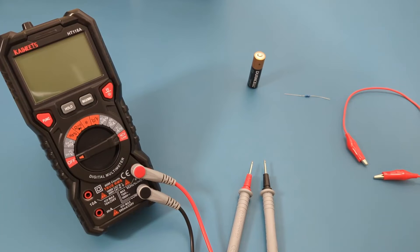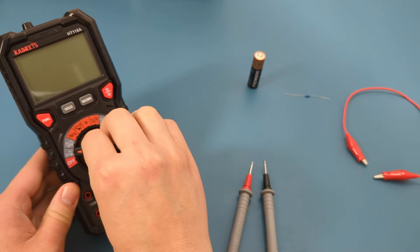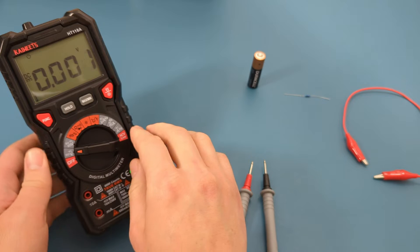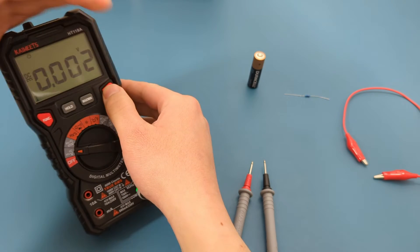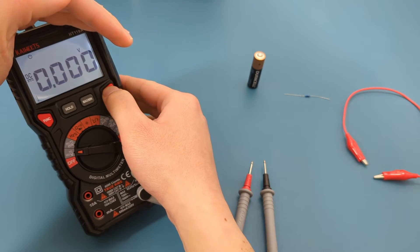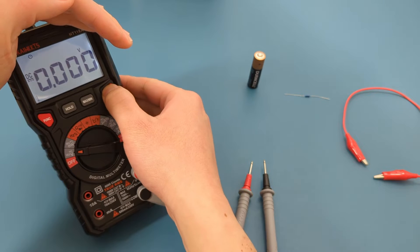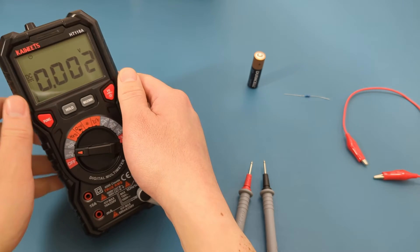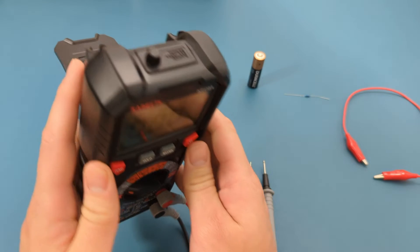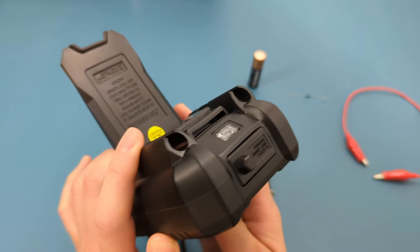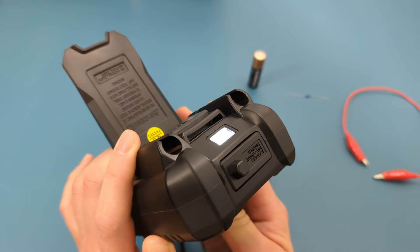Now it's time to see what this multimeter can do using different test scenarios. Before we get started, there are two more things we should look at. The first is to turn on the LCD backlight by pressing the red button. The second thing is the light you can turn on and off by holding the red button for a few seconds.